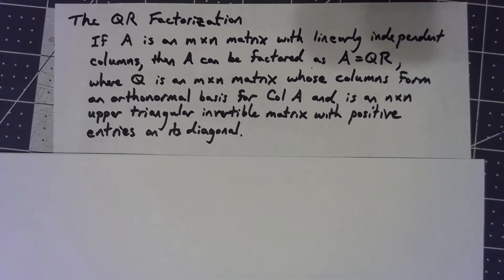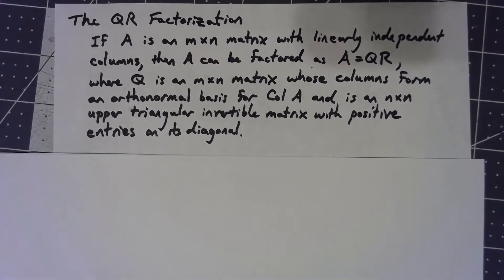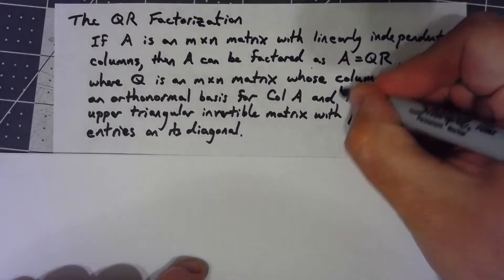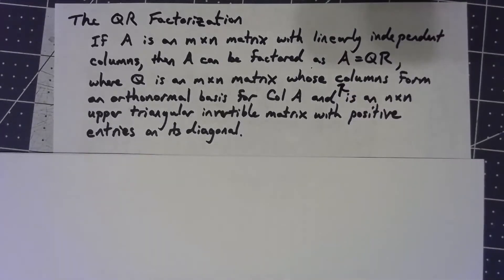If we've got such a matrix, then A can be factored as A equals Q times R. Q is also a matrix the same size as A, but the columns are an orthonormal basis for the column space of A. R is an n by n upper triangular invertible matrix with positive entries on the diagonal.